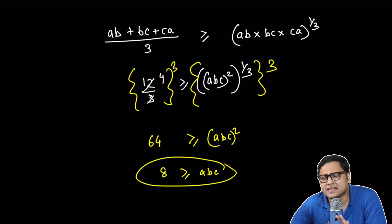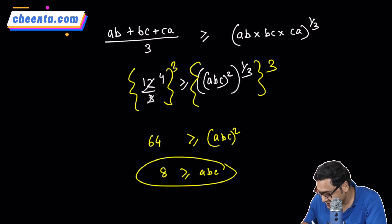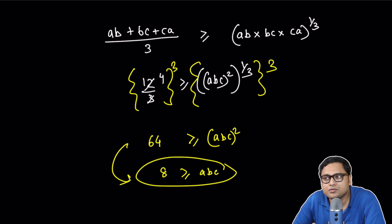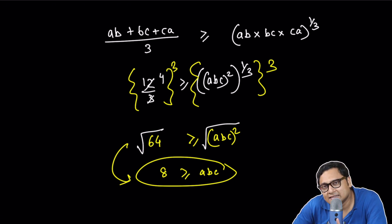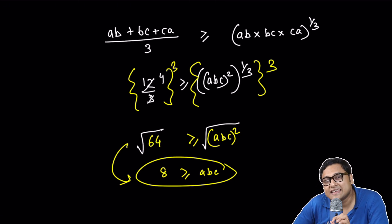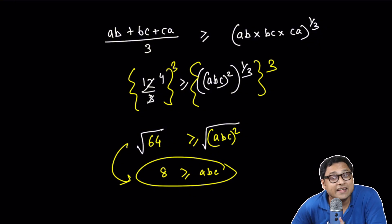There is a little bit of mathematics involved, conceptual mathematics involved in this last step. I want to talk about it for a minute. What I just did is that I extracted the square root on both sides. And when I did that, I actually kept the inequality as it is.